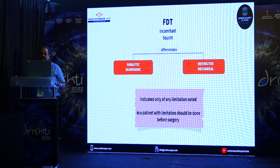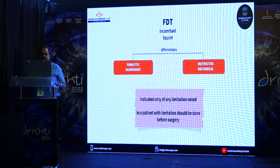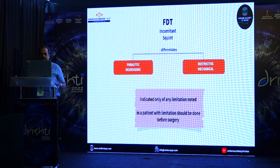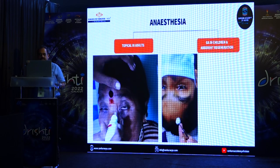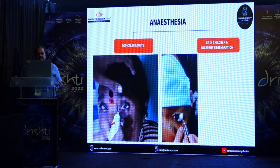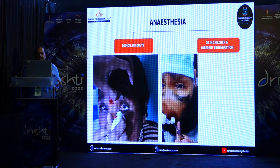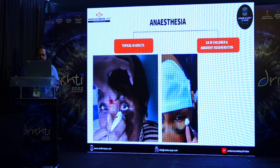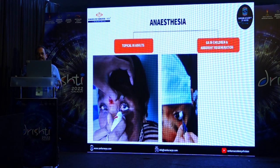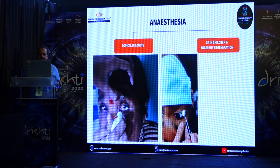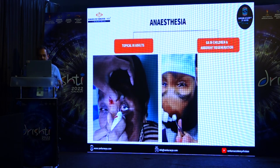The Force Duction Test largely helps differentiate broadly between a paralytic or neurogenic squint and a restrictive or mechanical squint. If ocular movements are full you will not do an FDT — it is indicated only when a limitation is noted, and should be done before the actual surgery. For anesthesia: topical in adults, sometimes augmented with a cotton pledget soaked in anesthetic. In children it is largely done under general anesthesia as tugging the eyeball can cause a lot of discomfort. In patients with aberrant regeneration, also done under general anesthesia to avoid erroneous readings.